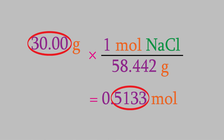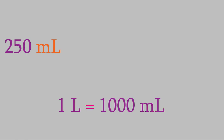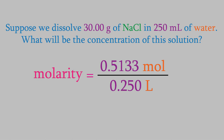If you've forgotten how to determine the correct number of significant figures, review video 7 — having the correct sig figs is always worth points on tests, quizzes, and homework. To finish the calculation, we put the liters of solution in the denominator. We have 250 milliliters, which is 0.250 liters using the conversion of 1,000 milliliters per liter. The result is a concentration of 2.05 M.